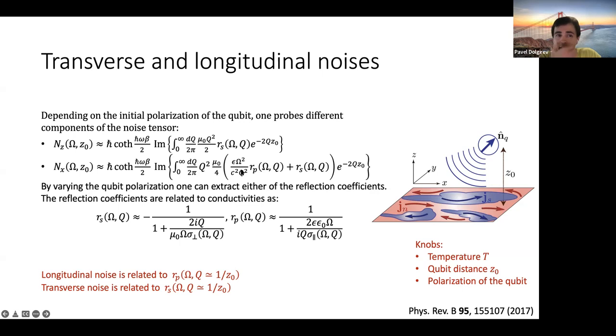So if I think about qubit, what it allows me, it allows me to do three things. The first one is that I can tune temperature, obviously. The second one, which is less obvious, that in practice one can vary distance. And the third, I can vary polarization of the qubit, in turn separate what I call longitudinal noise from transverse. Transverse is related to s-polarized, longitudinal related to p-polarized.